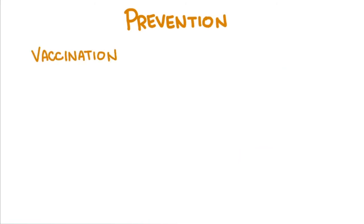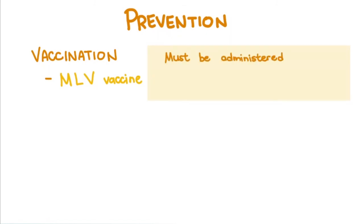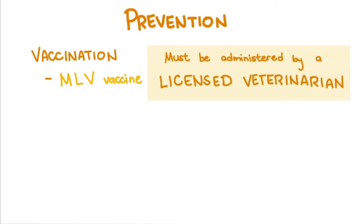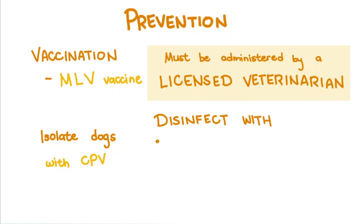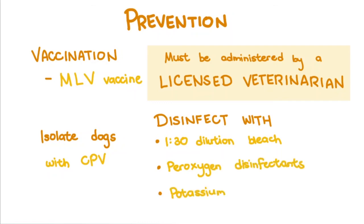Vaccination is done with a modified live virus vaccine. This must be administered by a licensed veterinarian, to ensure proper vaccine handling and administration at the appropriate age and intervals for the growing pup or dog. Dogs suspected or confirmed to have canine parvovirus must be isolated to prevent spread to other animals. Their living areas must be cleaned and disinfected with at least a 1:30 dilution of household bleach, peroxygen disinfectants, or potassium peroxymonosulfate.